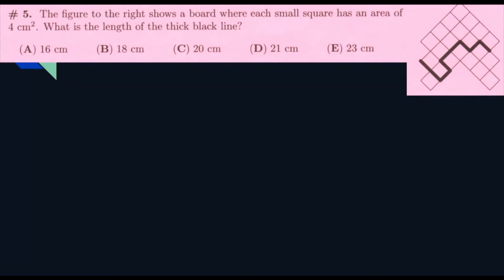So, the next question. The figure to the right shows a board where each small square has an area of four centimeters squared. What is the length of the thick black line? So, if one of the squares is four centimeters squared, and it's a square, so both sides have to be the same. We have to do the square root of four, which would be two. And, because that means one line would equal two. And, we have to count how many of those one lines are in the black line. So, there's one, two, three, four, five, six, seven, eight, nine. So, there's nine. And then, we do nine times two, which is 18. So, our answer is B, 18.